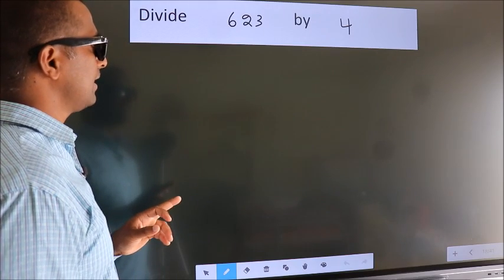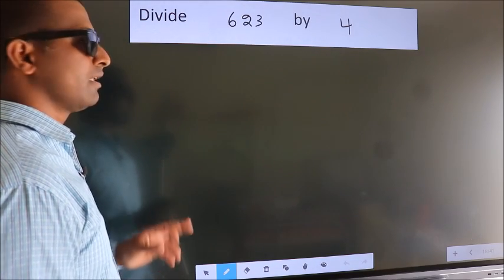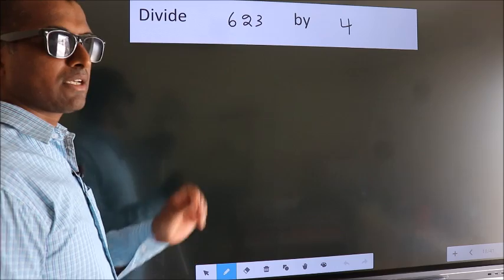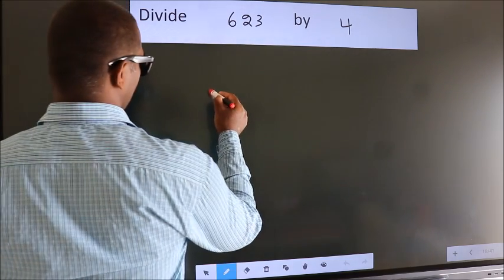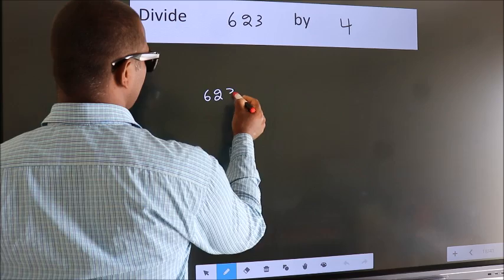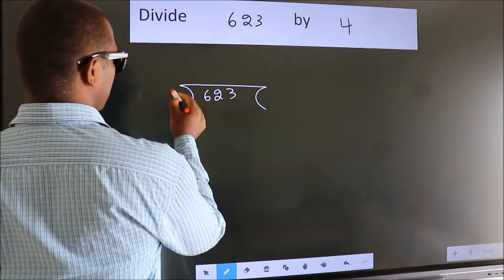Divide 623 by 4. To do this division, we should frame it in this way. 623 here, 4 here.